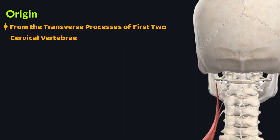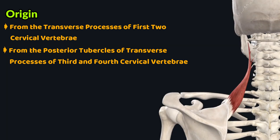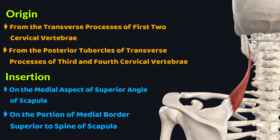The levator scapulae muscle originates from the transverse processes of the first two cervical vertebrae and the posterior tubercles of the transverse processes of the third and fourth cervical vertebrae. The fibers then travel inferolaterally to insert on the medial aspect of the superior angle of the scapula and the portion of the medial border of the scapula superior to the spine.